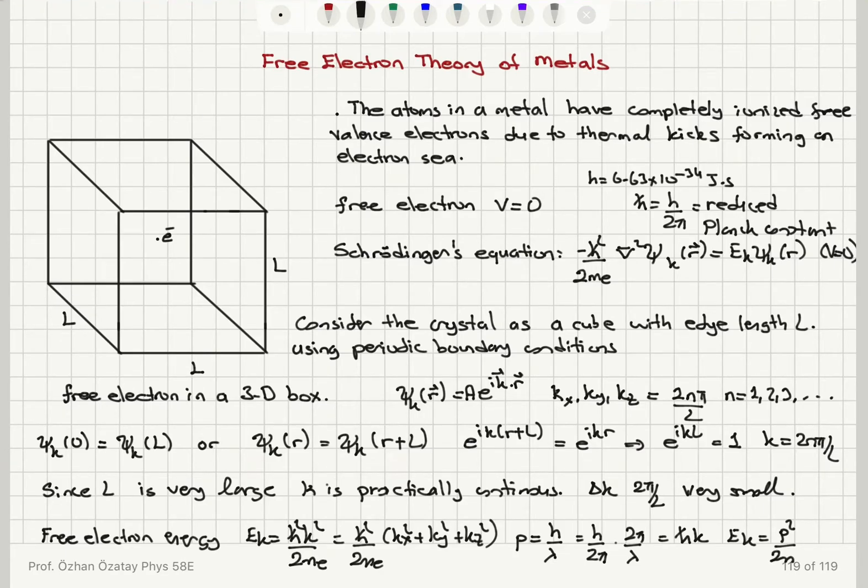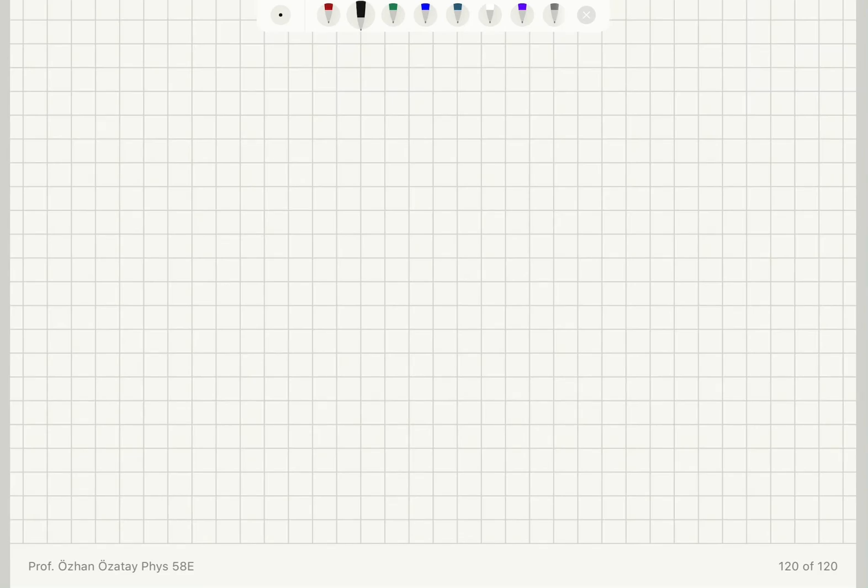There is only kinetic energy, there is no potential energy. If we plot energy as a function of k for these electrons in the one-dimensional case you see a parabolic relationship because it's proportional to k². This is symmetric. The energy as a function of k relationship is the dispersion relation.